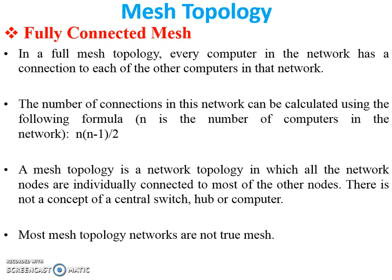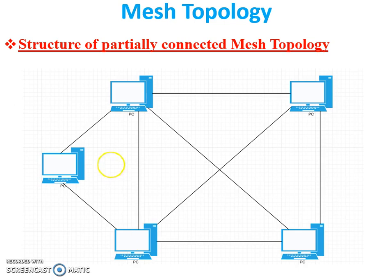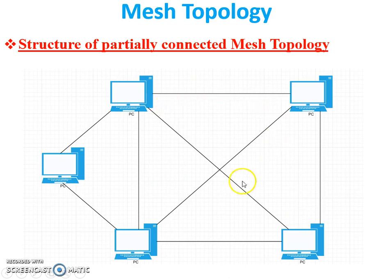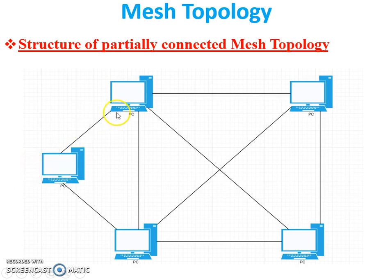In the structure of a partially connected mesh topology, at least one or two PCs are connected with other PCs, similar to a fully mesh connected topology. As you can see here, there are four PCs connected, but at least one or two PCs must be required. This is called partially connected because this PC is not connected with every other PC — it has a dedicated link only with specific PCs.